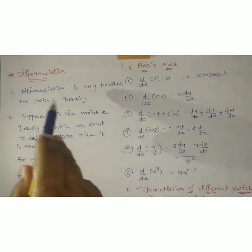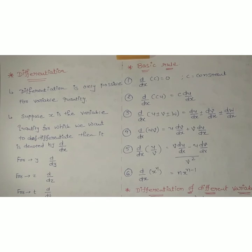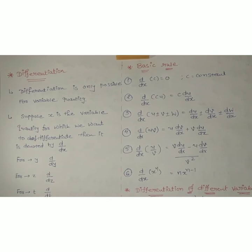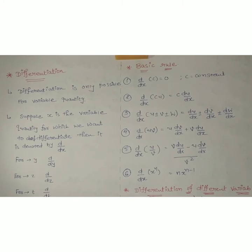Differentiation is only possible for variable quantities. Now you might have the question: what is a variable quantity? A variable quantity is one for which we can get different different values. The meaning of variable quantities is: the quantity whose values can be different — that is called a variable quantity.